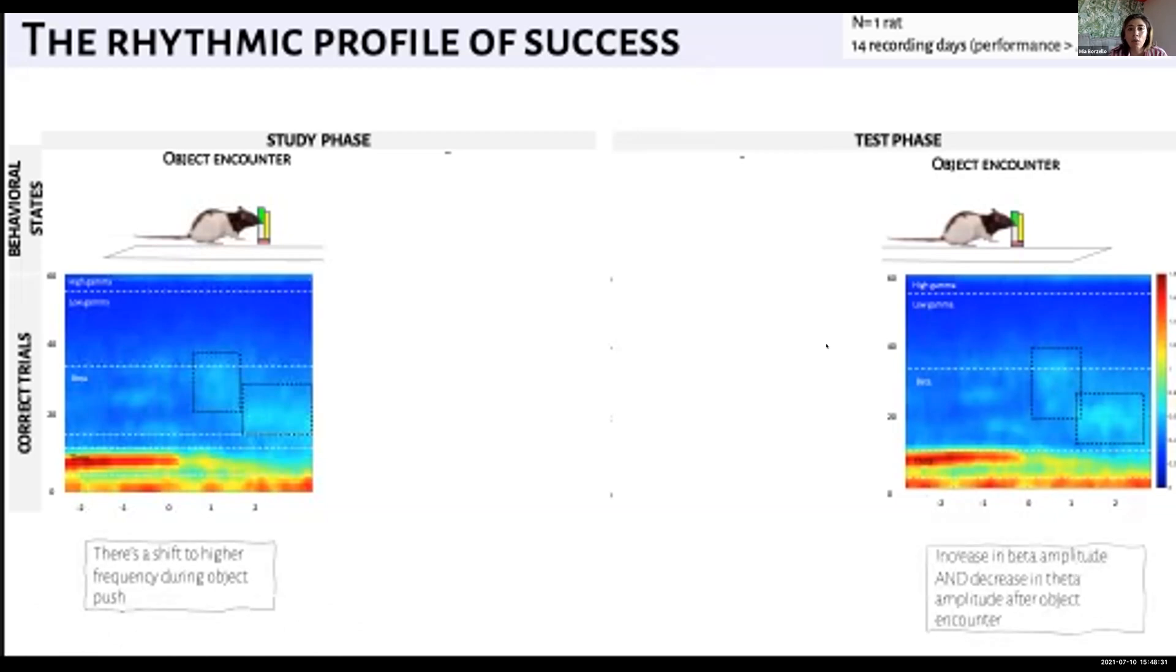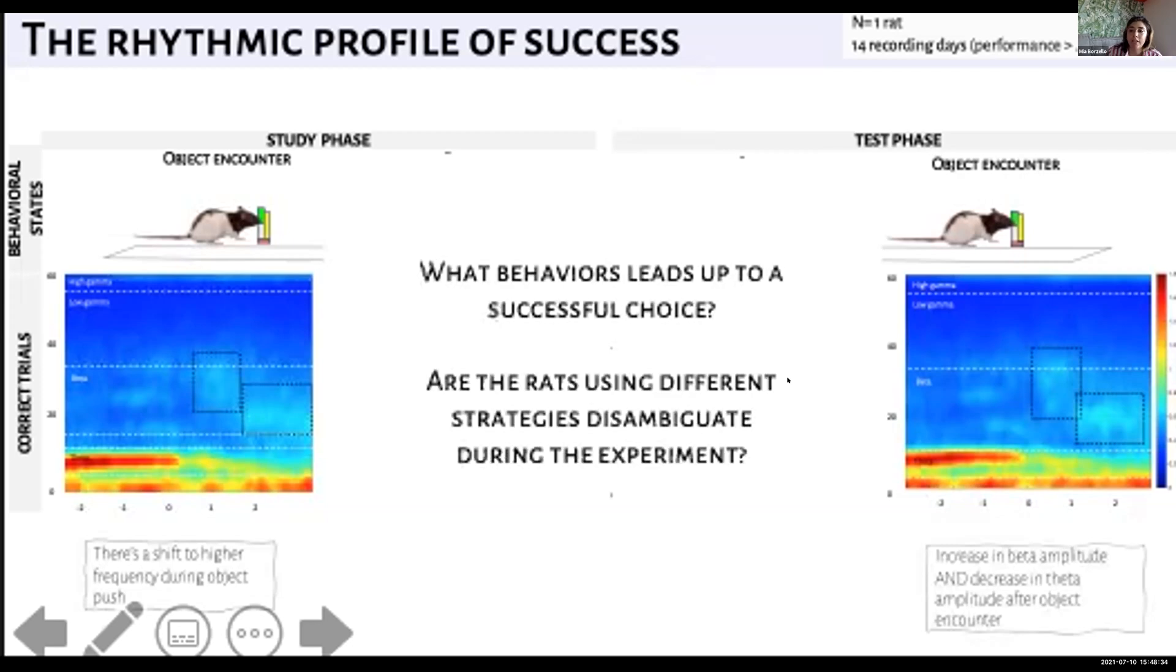We then ask what behaviors might serve learning leading up to a successful choice. Are the rats using different strategies to learn and disambiguate during the experiment? I could see this on a behavioral level while I was running the task because the rats that are most successful aren't the ones that are fastest out of the start box. Instead, the ones that are most successful tend to be the most thoughtful, pensive, and observant of the room throughout the task.